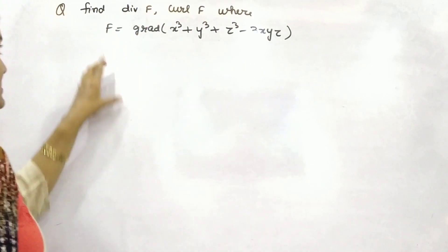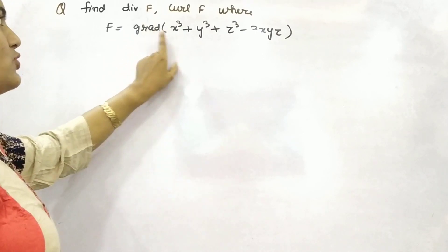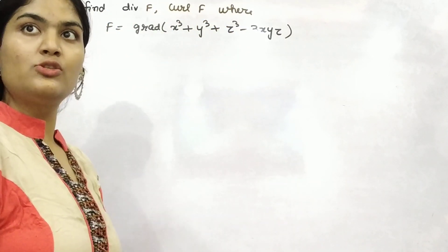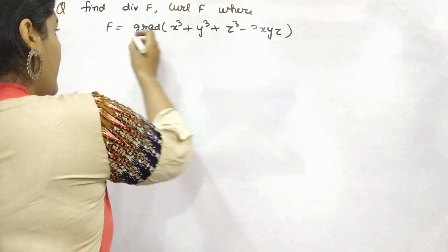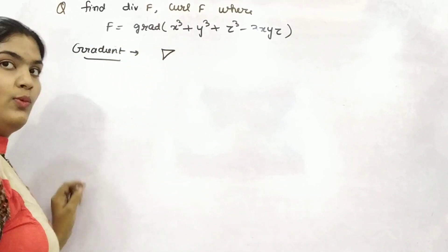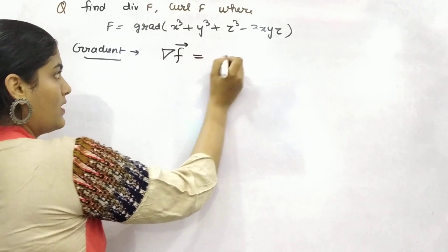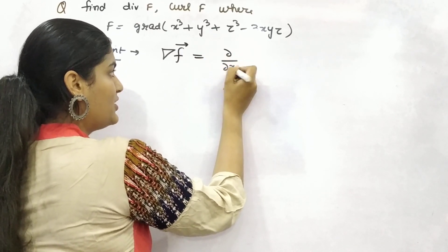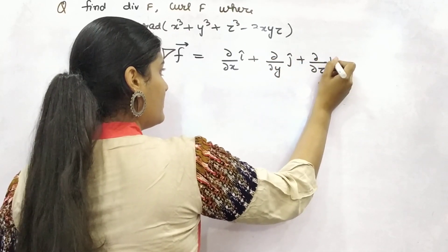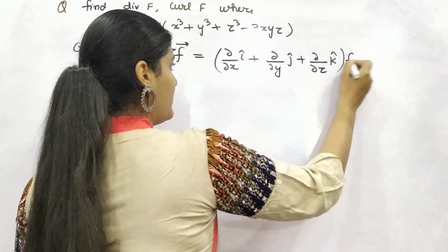A function is given to you in terms of x, y, and z, which is equal to the gradient of this function, and you need to find out the divergence and curl of that function. So how can you do it? First of all, how we can find out the gradient — it is denoted by the inverted del, and for any function you can find it by partially differentiating with respect to x, y, and z along the x, y, and z directions simultaneously and respectively.